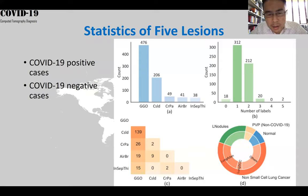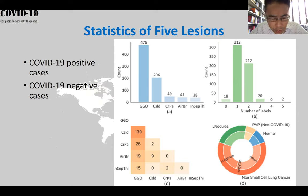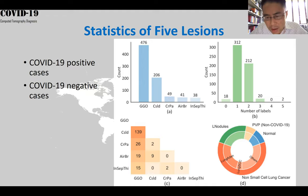Here's the statistics of the five lesions. For example, for GGO there are over 400 appearances, and for consolidation there are over 200 samples. Plot B is the number of labels, and panel C represents the pairwise concordance matrix — for example, consolidation and GGO appear at the same time in 139 images. The last panel shows negative cases.